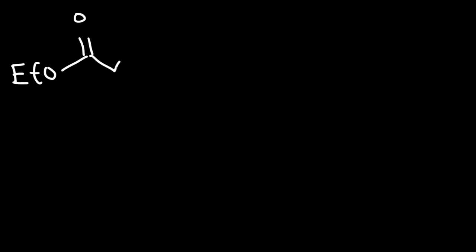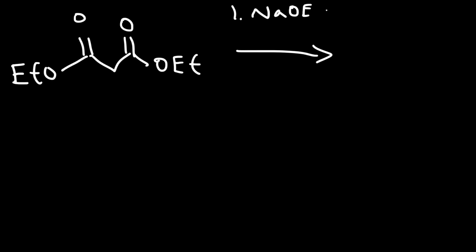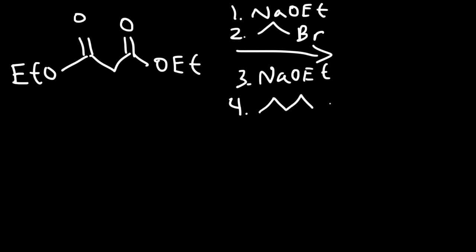Now let's work on another example. We're going to start with diethyl malonate again, and this time we're going to add two R groups. In the first step, we're going to use sodium ethoxide. In the second step, let's use ethyl bromide. In the third step, sodium ethoxide again. In the fourth step, butyl bromide. And then in the fifth step, H3O+ followed by heat.